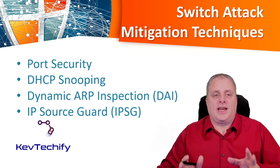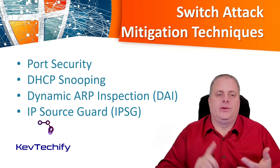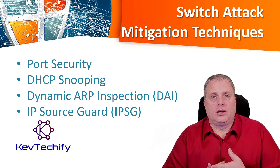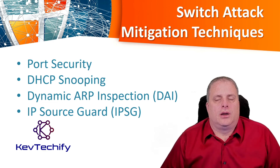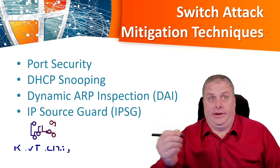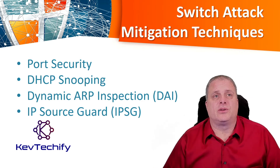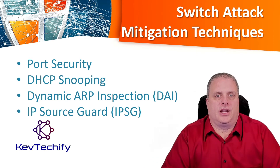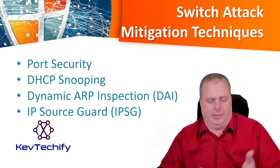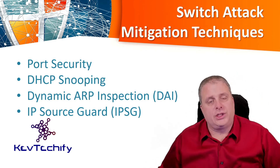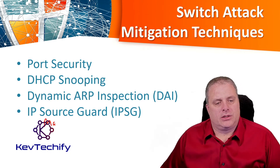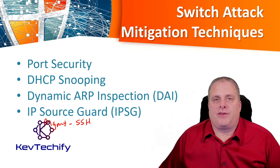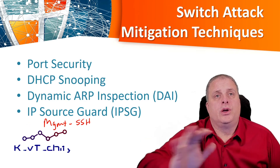To help mitigate against those attacks, we can use port security, DHCP snooping, dynamic ARP inspection, and IP source guard. But even if we implement all of these, if we don't protect and encrypt our management protocols, everything else won't be enough — someone will see our management traffic sent in clear text. We're talking about encrypted versus unencrypted, Telnet versus SSH. For management, you should always use SSH, which encrypts traffic when connecting into a router or switch to make changes.